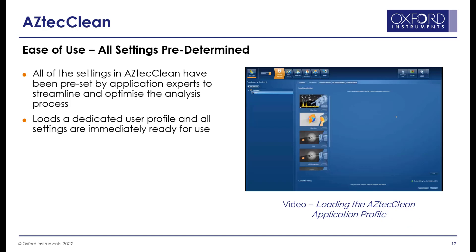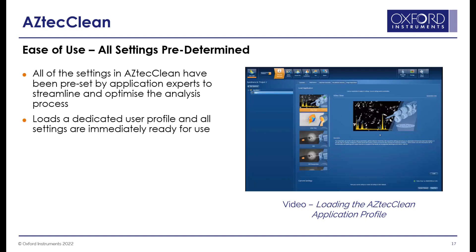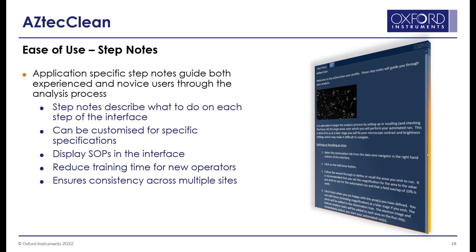AztecClean has a user profile system. All the settings are preset by experts to streamline the analysis process, so it is easy to load a dedicated user profile and all the settings are immediately ready for use. In the software, we have step notes which provide text to tell you what to do at each step of the software. It is useful to guide both experienced and new users through the analysis process. You can customize it, it helps to make sure you follow the same SOP all the time, and it is easy to use to train new operators and ensure consistency across multiple sites.